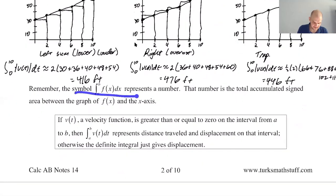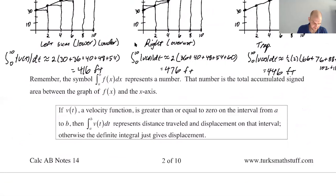And then we know that this could be or represents the total accumulated signed areas, so if we're above or below you'll get positives and negatives, it can happen. And then this I think is just a review. If v of t is greater than or equal to zero on the interval from a to b, then the integral of v of t represents the distance traveled and the displacement, so you get both. If v of t is greater than or equal to zero, otherwise the definite integral just gives displacement.